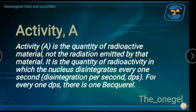The definition is, this is the quantity of radioactive material and not the radiation emitted by the material. If you can still remember our discussion of half-life, we were talking about radioactivity, the emission or the quantity of radioactive material, the emission of radioactivity of that certain material. It is the quantity of radioactivity in which the nucleus disintegrates every one second. That is why we have the term disintegration per second or DPS.